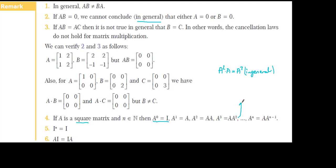To get A to the power of 4, we use A times A cubed. Continuing, A to the power of n equals A times A to the power of n minus 1. Also, the identity matrix to the power of n equals I, and A times I equals I times A equals A.